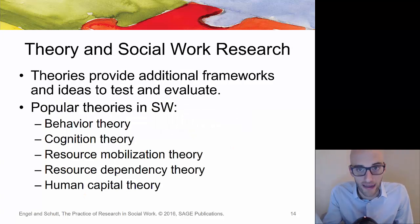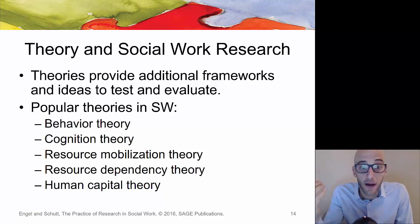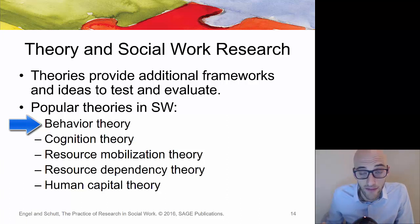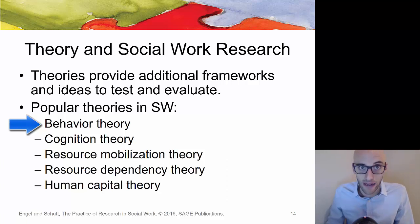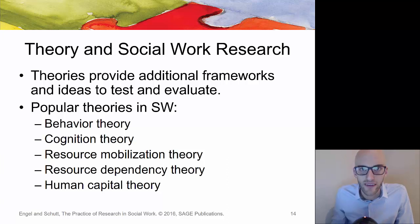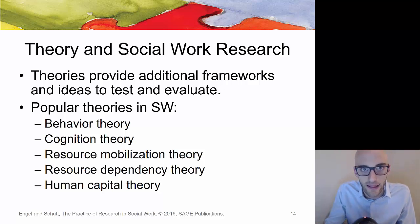Theory provides additional framework and ideas to test and evaluate. Popular theories within social work include behavioral theories — old-school conditioning, rewards and punishment — second-wave cognitive theory looking at how thinking impacts behavior, and third-wave ACT-based approaches focused on acceptance, commitment, and cognitive flexibility. Also resource mobilization theory, resource dependency theory, and human capital theory all give good theoretical frameworks and help link together a body of research in a particular area of interest.